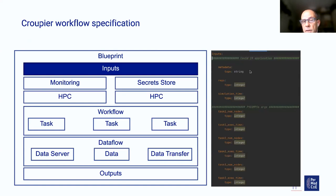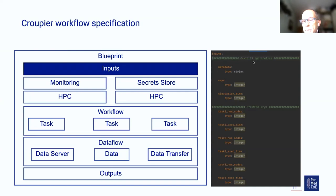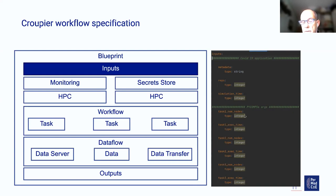For inputs, the inputs can be any inputs required by the application — this is decided by the application owner. For instance, in this case we have COVID-19 application inputs. For some applications I have a larger number of inputs depending on the purpose of the application owner. I also have some arguments for the workflow manager being used in the target infrastructure to execute every single task — which is PyCOMPS. For every task, we are selecting the number of nodes within the infrastructure to use, what is the expected execution time in order to allocate a particular priority to run the job in the queue.